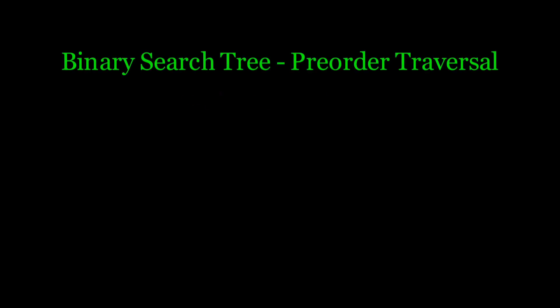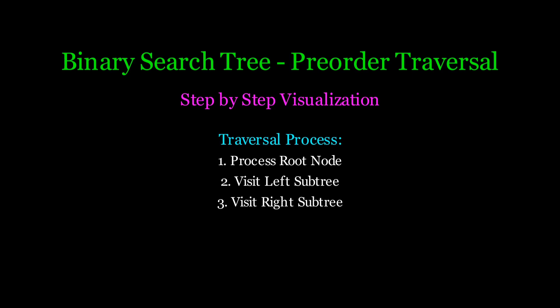Next is pre-order traversal. It follows a simple rule: root, then left node, then right node. We visit the root node first, then explore the left subtree, and finally move to the right subtree.